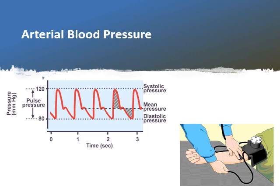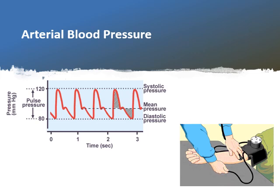What is the systolic blood pressure? Systolic blood pressure is the maximum pressure exerted on the arterial wall during systole, caused by the ventricular contraction. In a normal adult, it ranges between 90 to 140 mmHg, with an average of 120 mmHg.